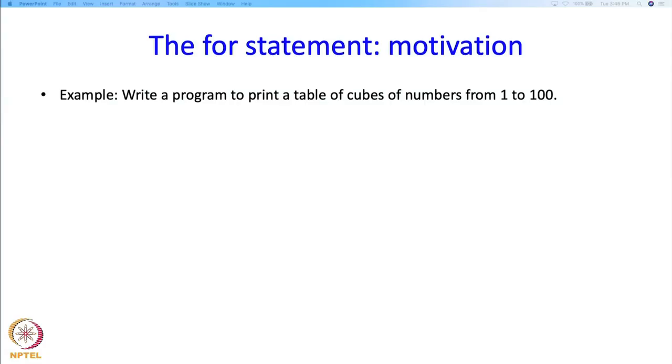So here is a problem. We would like to write a program to print a table of cubes of the numbers from 1 to 100. So we want on the first line 1 and 1, on the second line 2 and 8, on the third line 3 and 27, on the fourth line 4 and 64, 5 and 125, and so on all the way till 100. Now of course you can write this using the while or even using the repeat, because you know that you are going to do exactly 100 iterations.